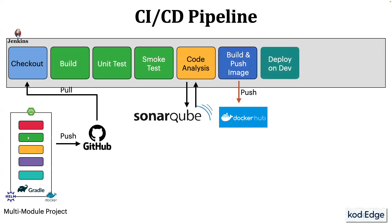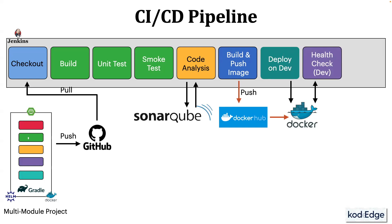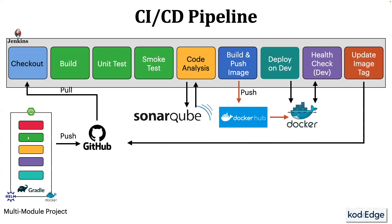Next stage will be deploy on dev, where we will deploy our application to the Docker environment for development purposes. During deployment, Docker will pull the image from Docker Hub that we pushed in the previous stage. The health stage will verify the health of our application once it is deployed in the development environment. Finally, the last stage will be the update image tag, where we will update the Docker image tag in the values.yaml file. The values.yaml file is used for the Helm chart, which serves as a default configuration for the chart template.